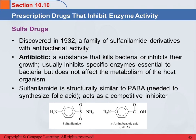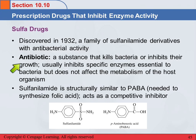Sulfa drugs also inhibit enzyme activity. These were discovered in 1932 and consist of a whole family of derivatives of sulfanilamide. They have antibacterial activity — when we say antibiotic, we mean a substance that kills bacteria or inhibits their growth. Usually these work by inhibiting specific enzymes that are essential to the bacteria, but they don't affect the metabolism of the host organism.